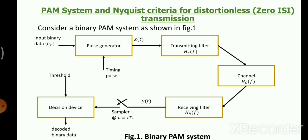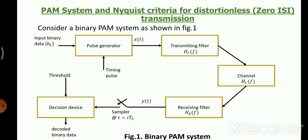Let us consider a noiseless but dispersive channel. Because of the transmitted waveform made up of rectangular pulses and the band-limited nature of the channel, you may not receive the same signal you transmitted. After receiving, you sample the signal at rate t = iT_b to recover the binary data, and then based on a threshold you make a decision in favor of bit 1 or bit 0.